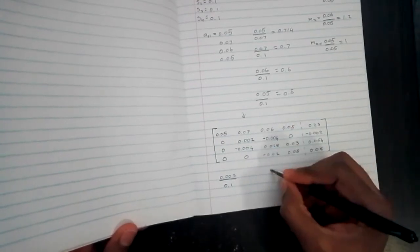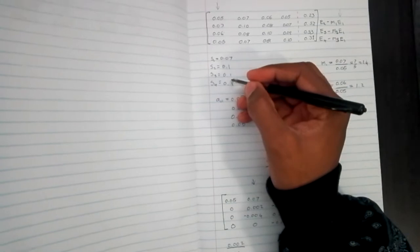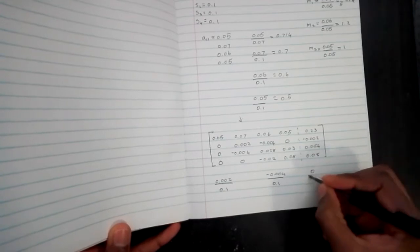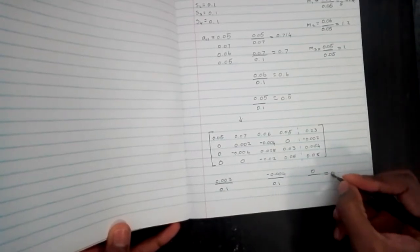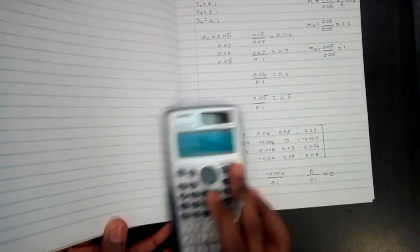We do the same for the next one, which is minus 0.004, divided by that S3 value, and that's also 0.1. And likewise with the third one, which is 0 divided by a certain value, which should still be equal to 0. So the value here is 0.1, but it should still be equal to 0.